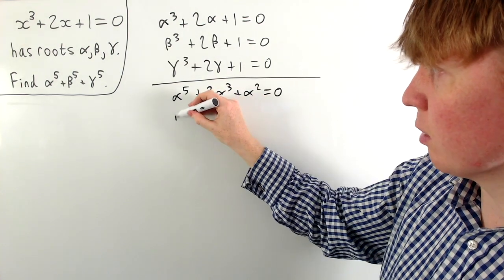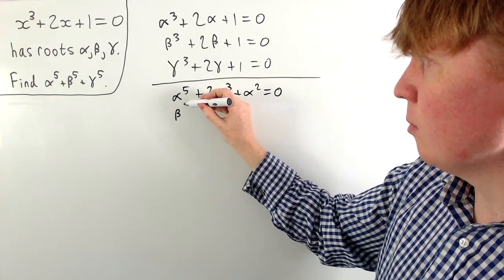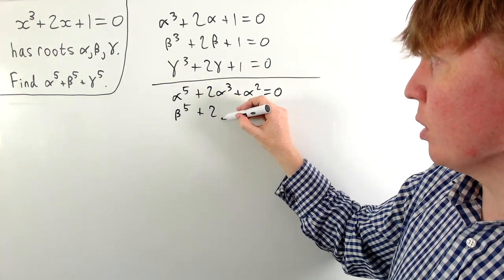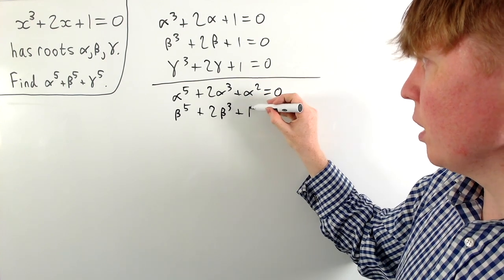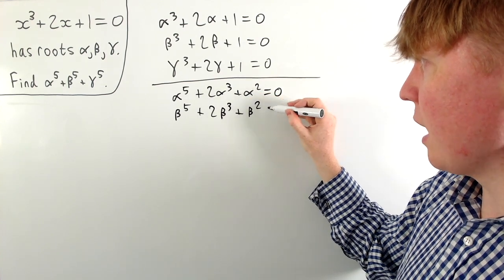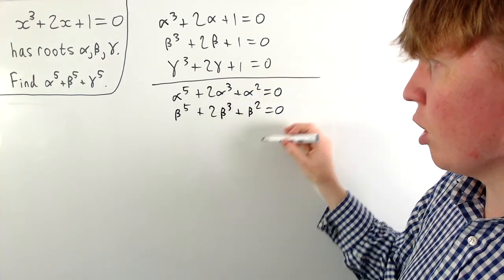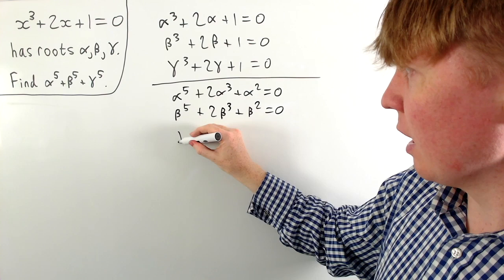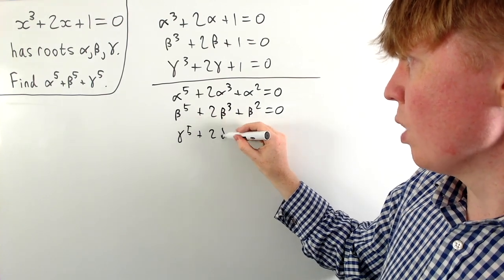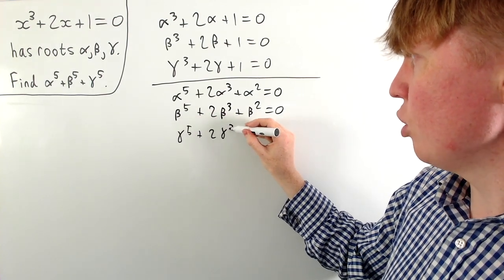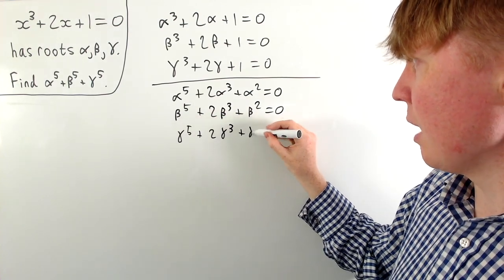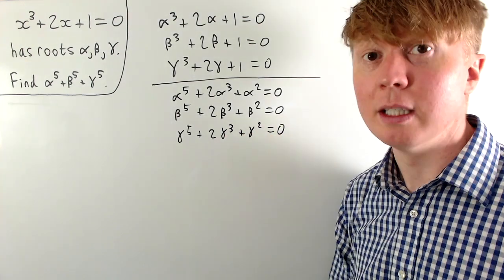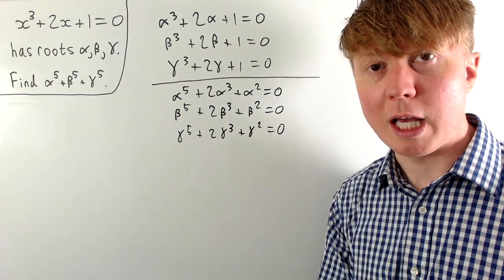Multiplying the second equation by beta squared gives: beta to the five plus two beta cubed plus beta squared equals zero. And multiplying the third by gamma squared gives: gamma to the five plus two gamma cubed plus gamma squared equals zero.